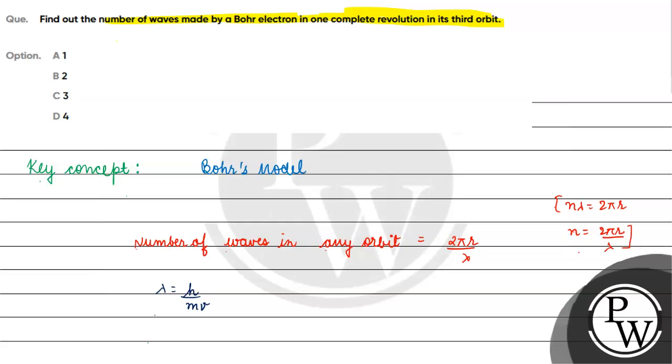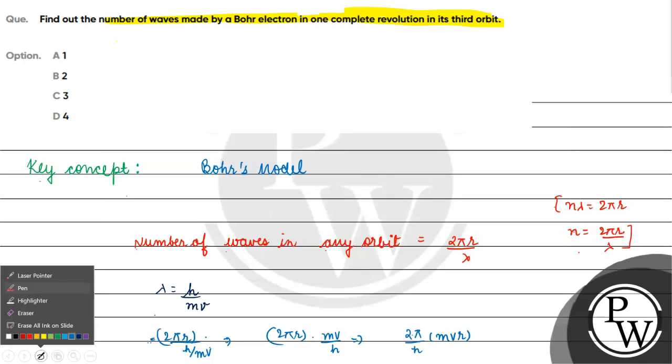If we keep this equation in place, 2πr, lambda equals h by mv. So this becomes 2πr divided by h/mv, which is 2π by h into mvr. mvr is angular momentum.